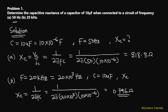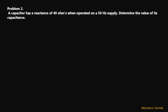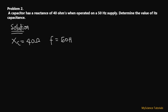Let's look at another example. Problem two: a capacitor has a reactance of 40 ohms when operated on a 50 Hz supply. We are to determine the value of its capacitance. From the question, Xc = 40 ohms and f = 50 Hz. We need to find C, which is what we do not know.